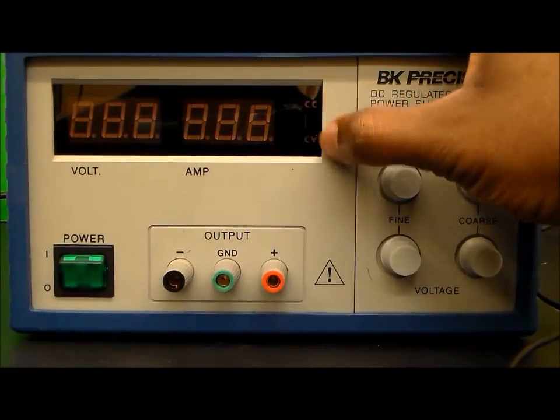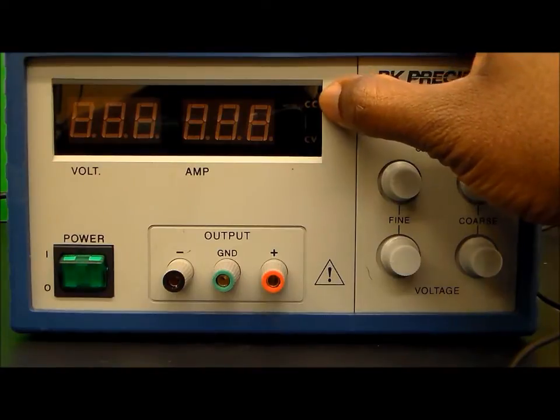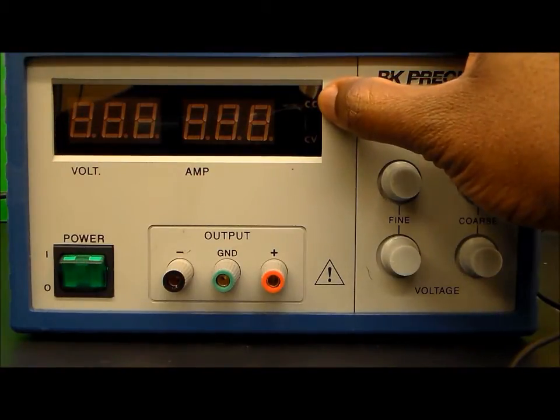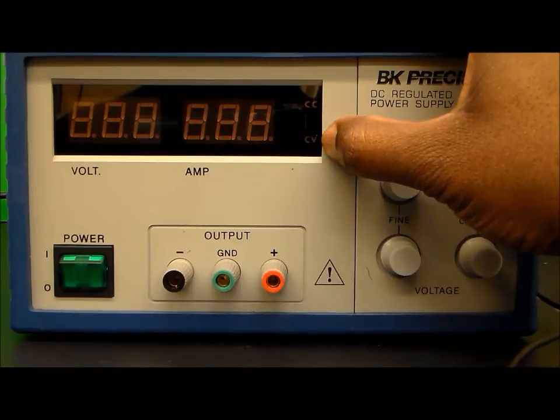And then we have two areas over here, one that indicates when the power supply is outputting a constant current, one when it's outputting a constant voltage.